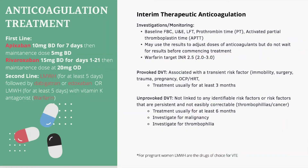In terms of anticoagulation to use, NICE suggests apixaban or rivaroxaban first line — these are DOACs, direct oral anticoagulants. Second line treatment is low molecular weight heparin for at least 5 days, then followed by dabigatran or edoxaban, or low molecular weight heparin for at least 5 days with vitamin K antagonists such as warfarin. Baseline blood tests include FBC, U&Es, LFTs, and coagulation studies such as prothrombin time and activated partial thromboplastin time. For patients on warfarin, the target INR is 2.5, or between 2 and 3.